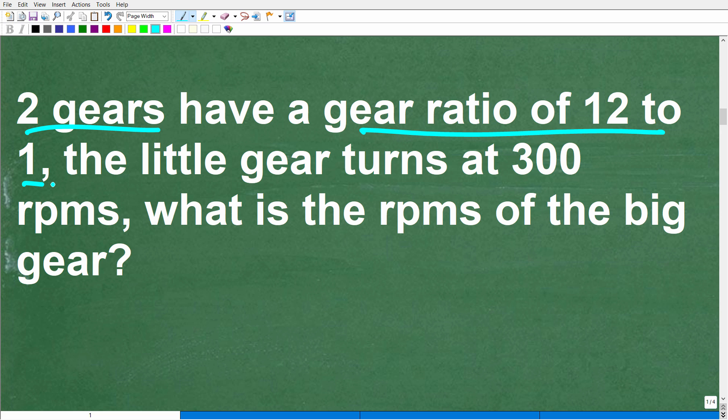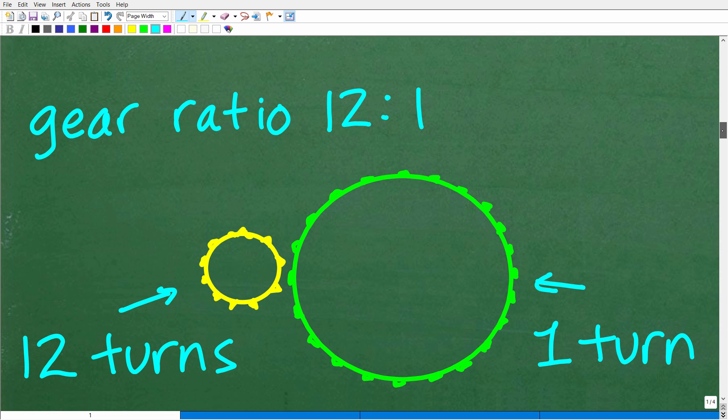One gear is a small gear and the other gear is a big gear. This is my sketch of two gears. If I said we have a gear ratio of 12 to 1, I have a small gear and a big gear.